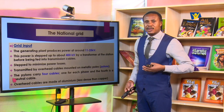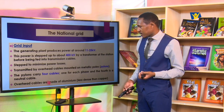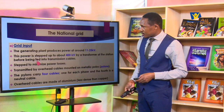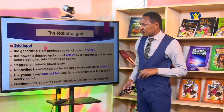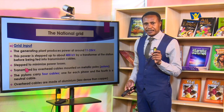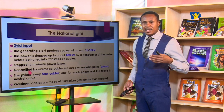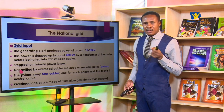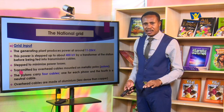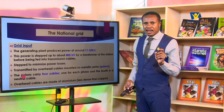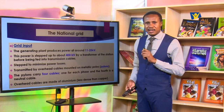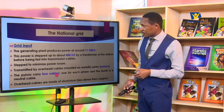Copper is also a very good electrical conductor and may be used at some other points. So the grid input is what comes from the power plant. Once the power is generated at the plant it is stepped up, and in the process the current is reduced. The reduced current flowing through the transmission cables minimizes heat dissipation in the process of power transmission.